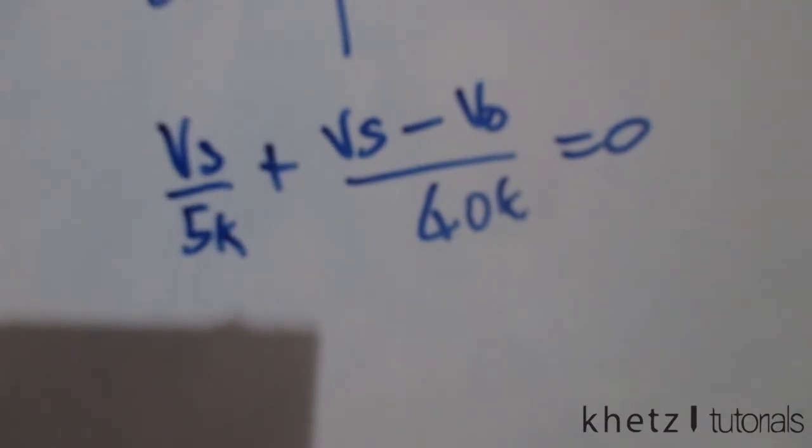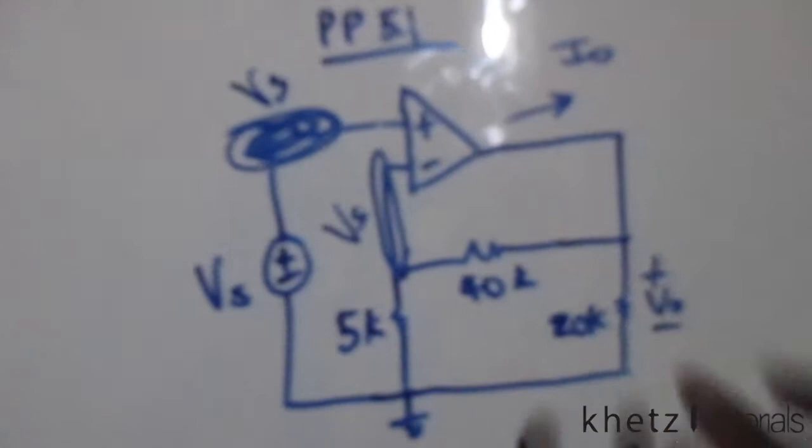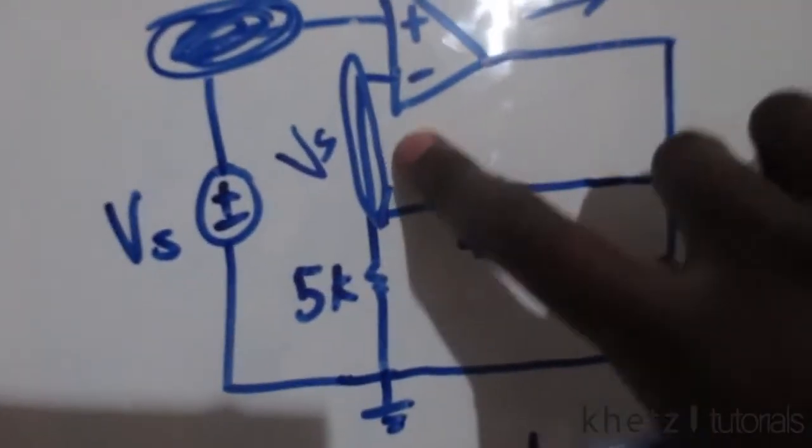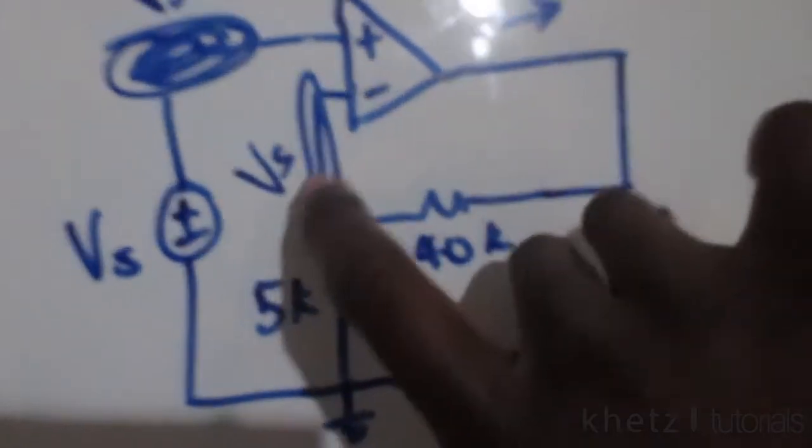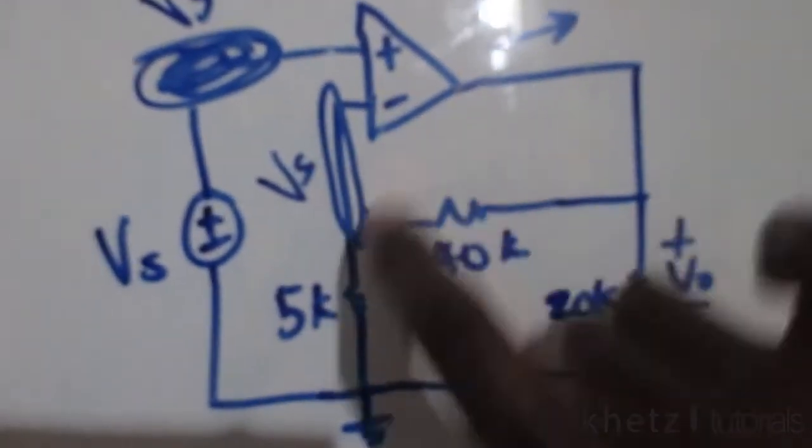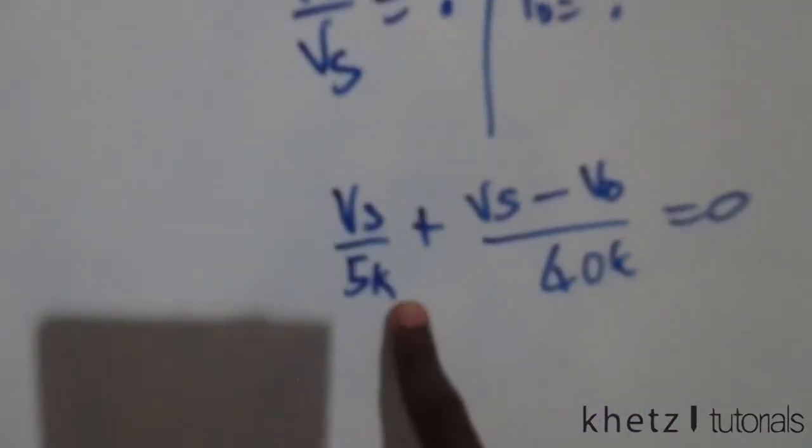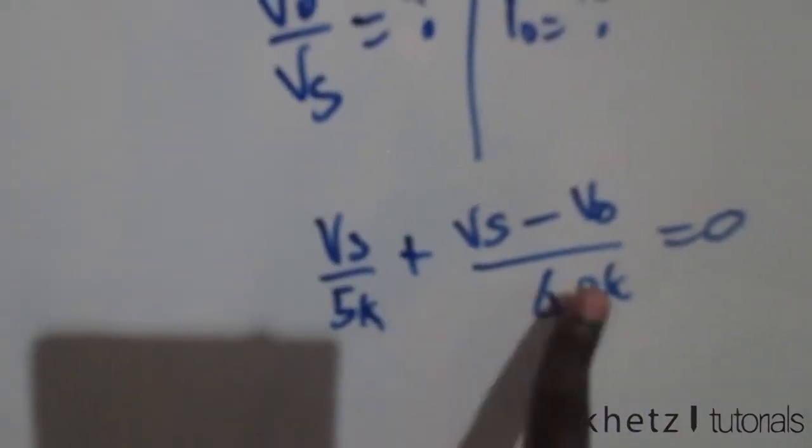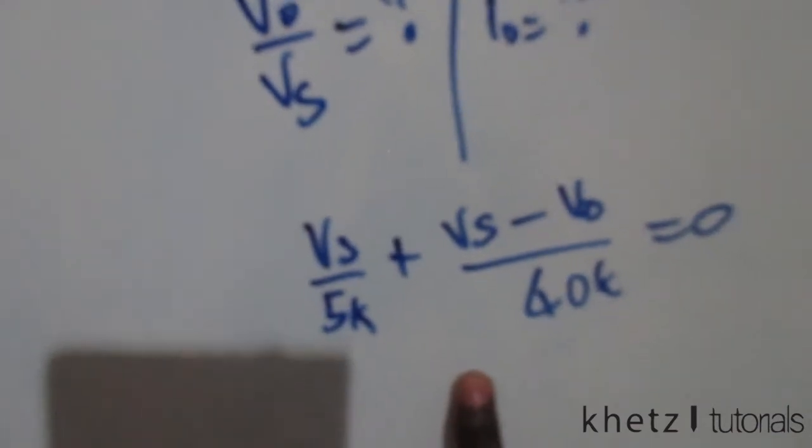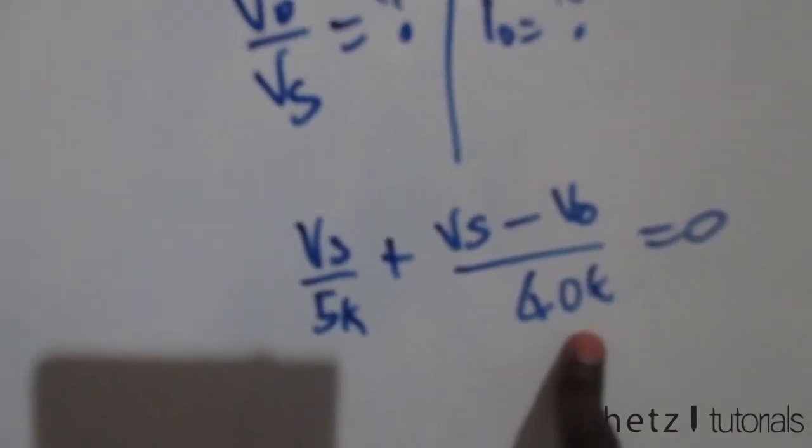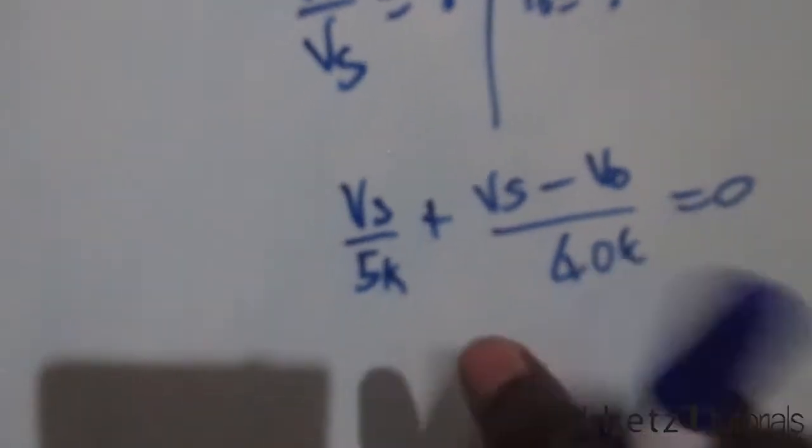We only have two terms in our nodal equation because there isn't any current associated with this wire which is connected to the terminal. I chose them as going out, and that is why both of them are positive. So we can multiply through by 40k. Multiplying through by 40k, we're going to have 8vs plus vs minus vo.